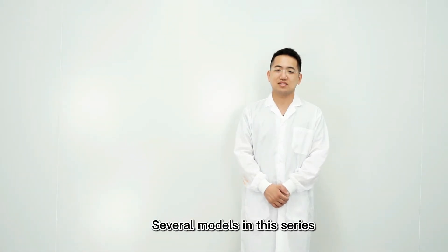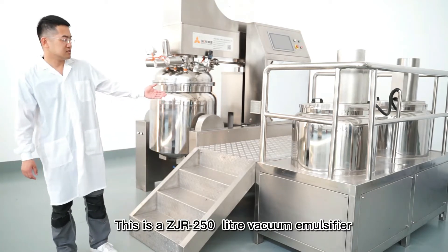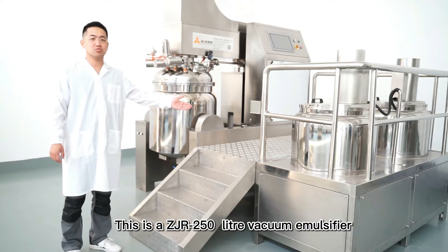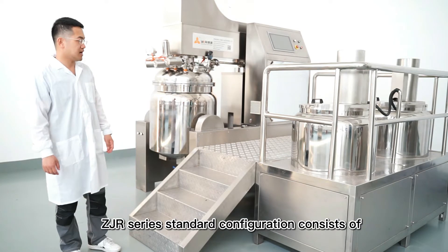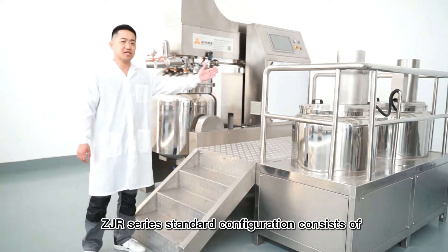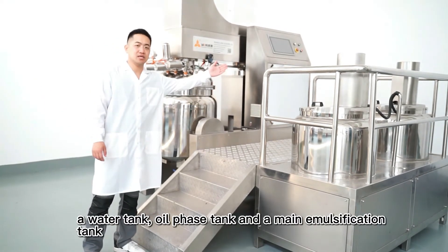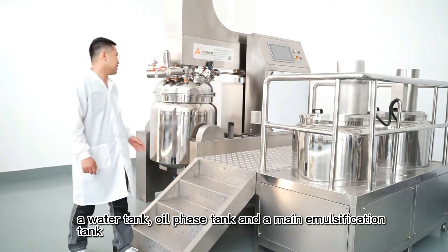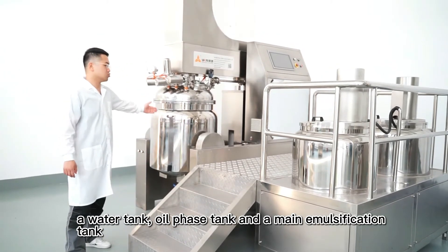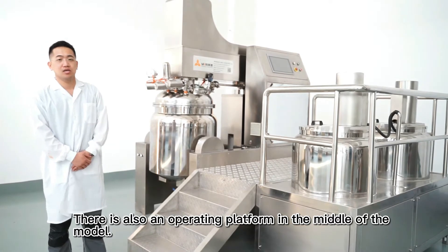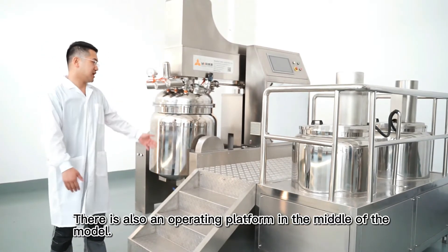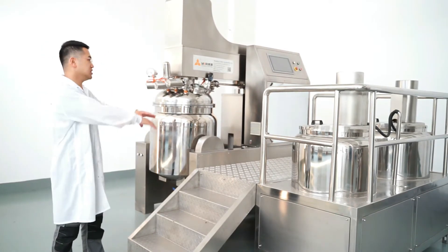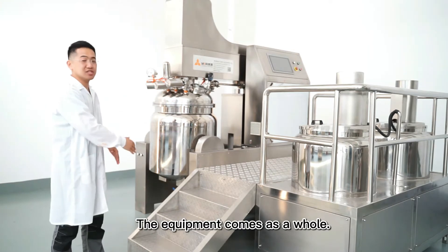Let's take a look at several models in this series. This is a ZJR 250 liter vacuum emulsifier. The ZJR series standard configuration consists of a water tank, oil-faced tank, and a main emulsification tank. There is also an operating platform in the middle of the model. The equipment comes as a whole.